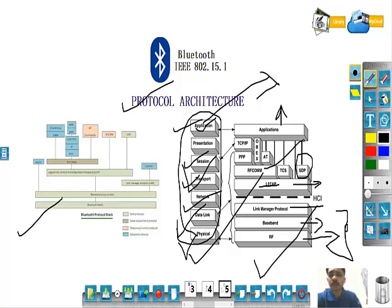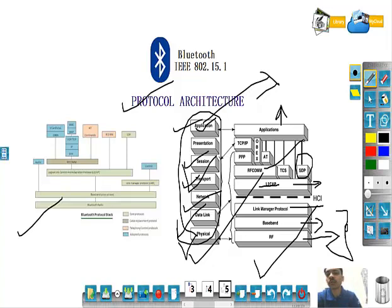RFCOMM is a cable replacement protocol included in the Bluetooth specification. It presents a virtual serial port designed to make cable replacement as transparent as possible. Serial ports are one of the most common communication interfaces for computing devices, so RFCOMM enables replacement of serial port cables with minimum modification to existing devices. RFCOMM provides binary data transport and emulates EIA-232 — formerly known as RS-232 — control signals over the Bluetooth baseband layer.